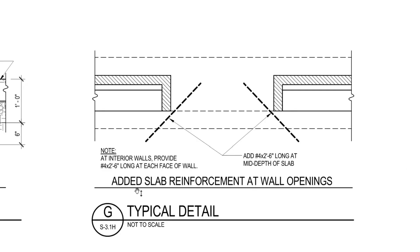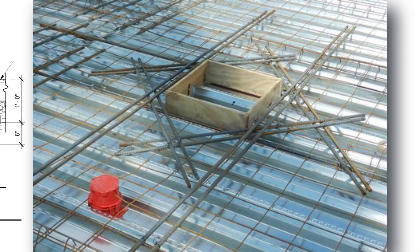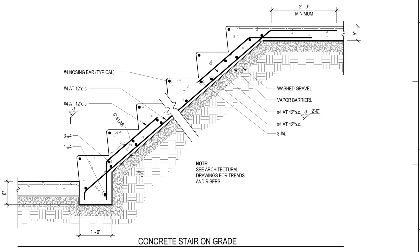The next typical detail is added slab reinforcement at wall openings. The note reads: at interior walls, provide number four bars two-and-a-half feet long each way at the face of wall. So wherever there are openings in a concrete interior wall, you provide two-and-a-half-foot-long number four rebar at the face of each wall at the edges of those openings.